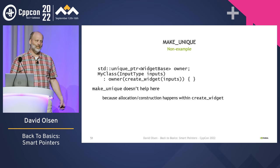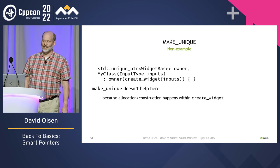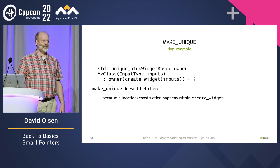make_unique can't be used everywhere. When the allocation of the object and the creation of the unique_ptr happen in different places — as in the example where the widget is allocated in create_widget and the unique_ptr is constructed in the MyClass constructor — there is no place to put the call to make_unique.